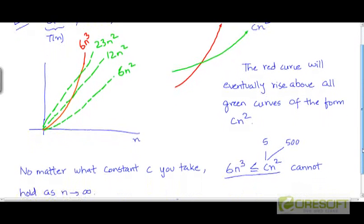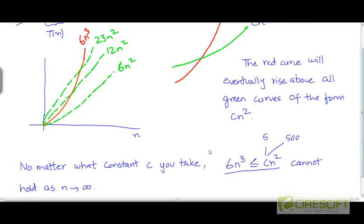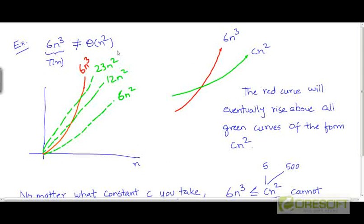So because both those inequalities cannot be satisfied, only one of them can be satisfied, we say that T is not theta of n². 6n³ is not theta of n². 6n³ grows much faster than a function that is theta of n².